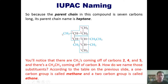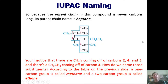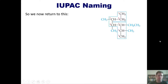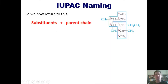You'll notice there are CH3 groups coming off of carbons two, four, and five, and a CH2CH3 coming off of carbon three. According to the table, a one-carbon group is based on methane and a two-carbon group is based on ethane. We move the molecule to the upper right of the screen, remembering we name it by placing substituent names first, then the parent chain name at the end.